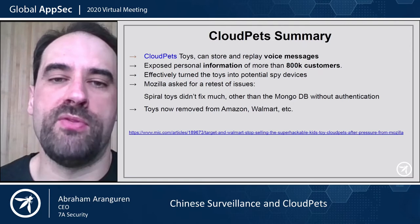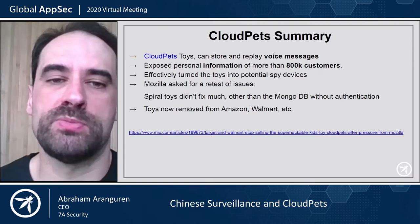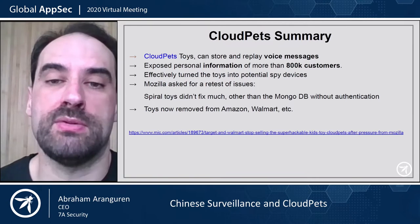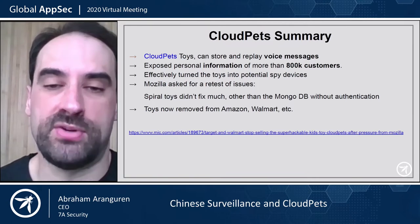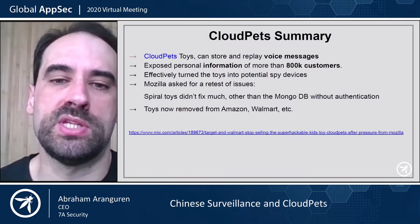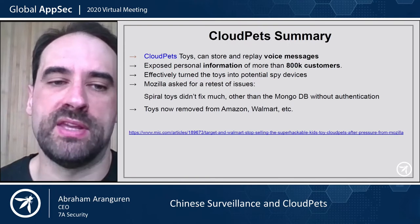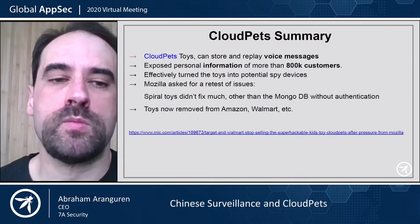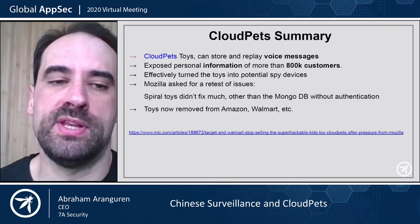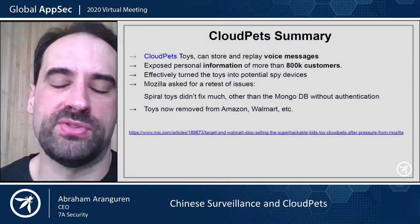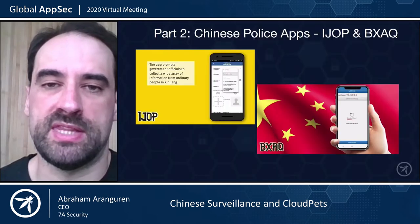In summary, CloudPets toys can store and replay voice messages, they expose personal information of more than 800,000 customers, and effectively turn the toys into potential spy devices. Mozilla asked for a retest of the issues, and we found they didn't fix much other than the MongoDB without authentication. Thanks to Mozilla, the toys are now removed from Amazon, Walmart, and all the other shops, because after the retest it was found they fixed nothing, so it was basically shut down. I think they are bankrupt now.